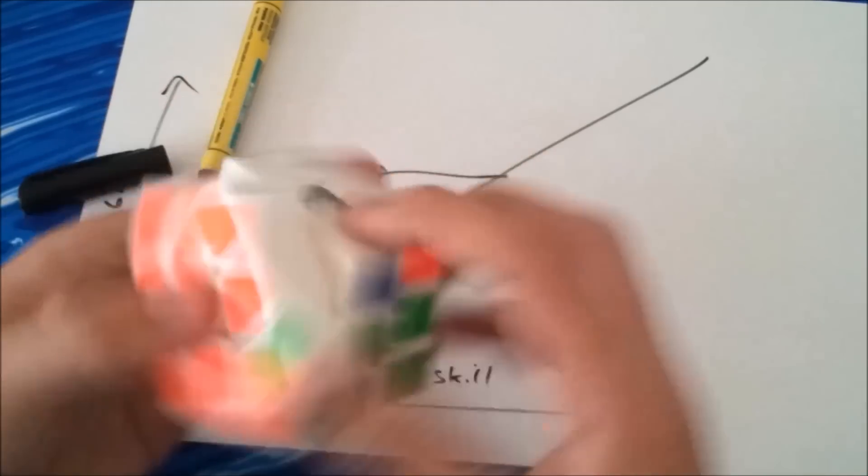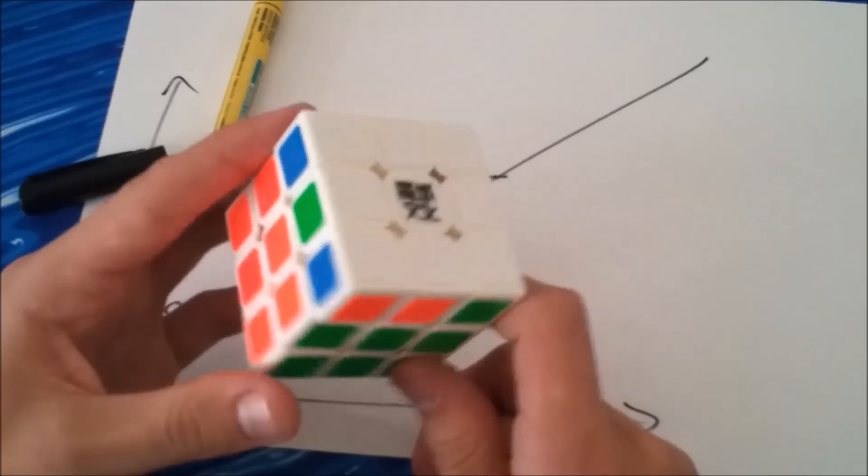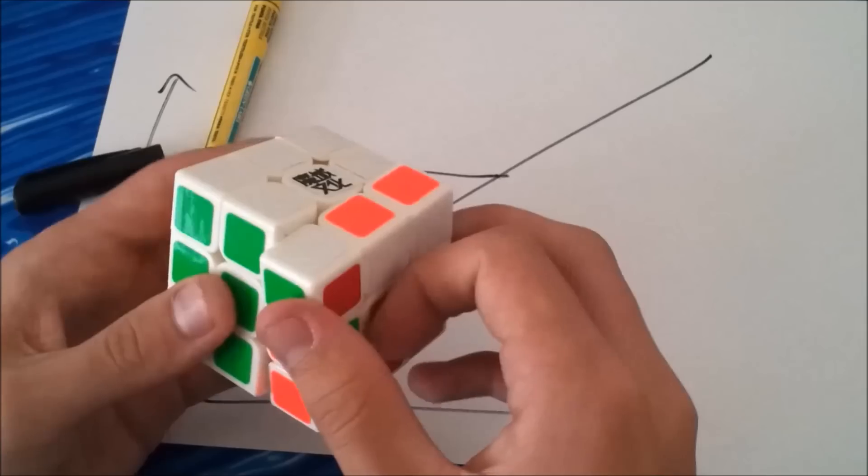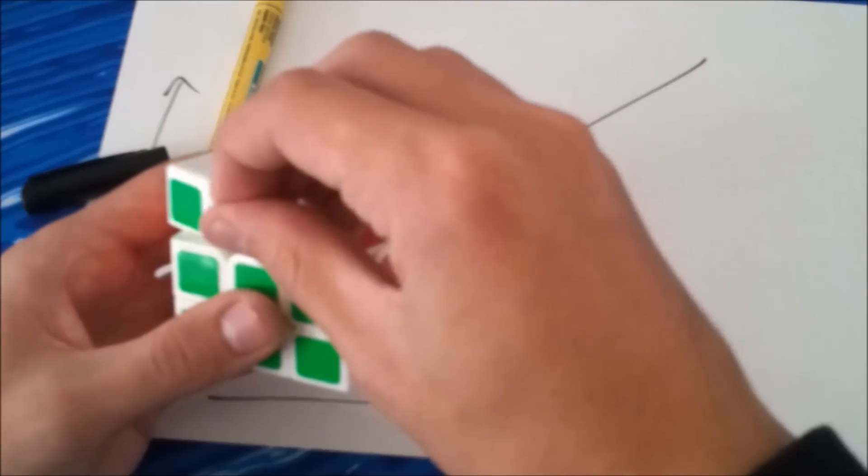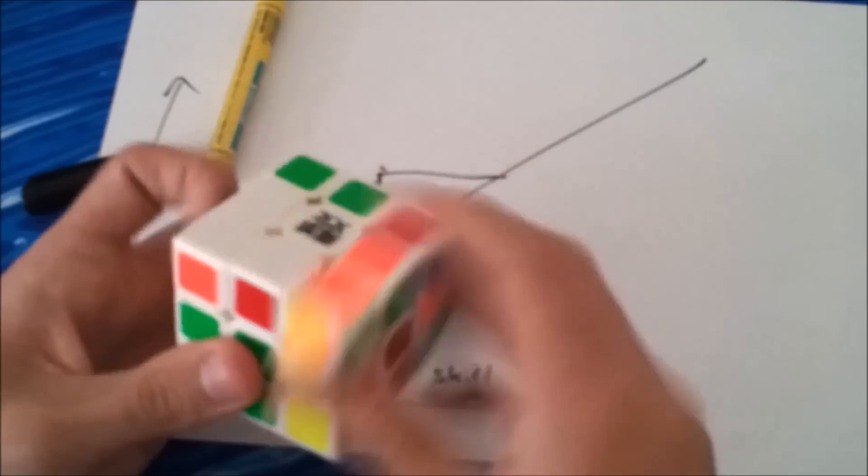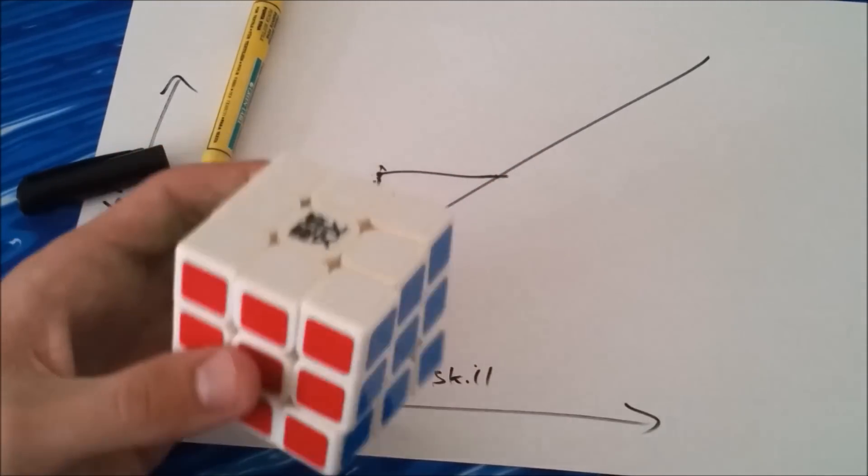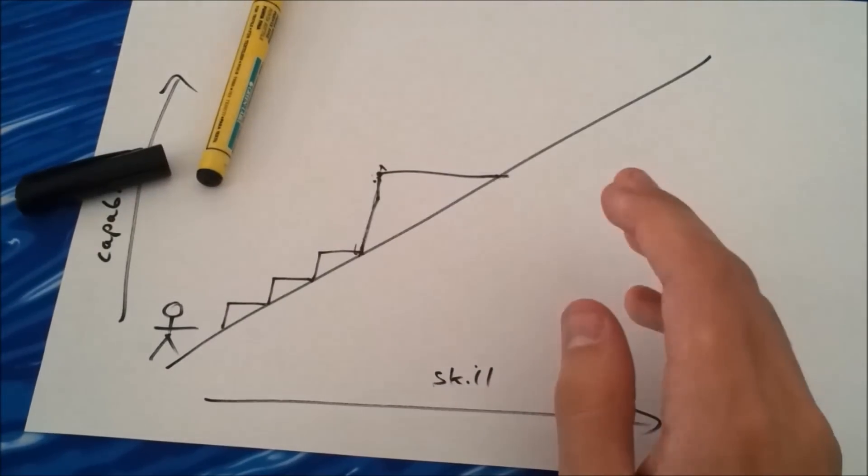And also stuff like, depending on the AUF, so for a T-perm, like if you do it, execute it, like I know exactly how I'm going to AUF it like that. Instead of just doing the T-perm and then re-gripping and then doing a U. Like, those are the sort of efficiencies and optimizations you can just develop.